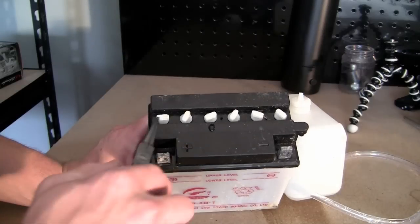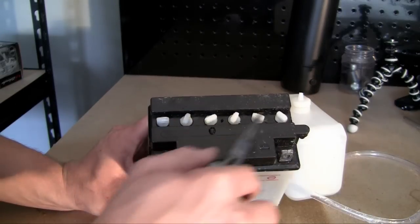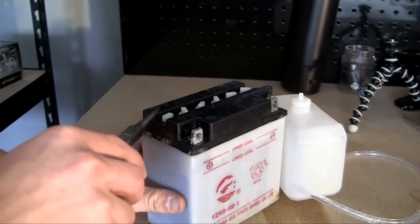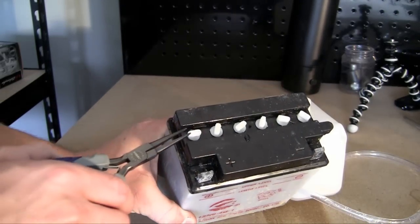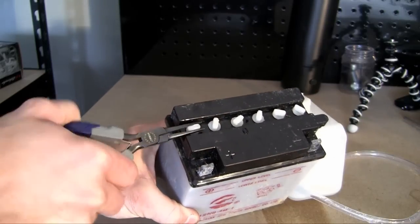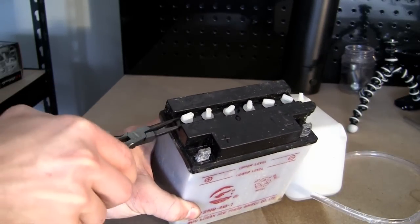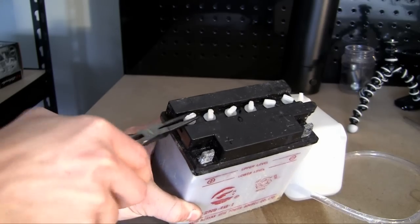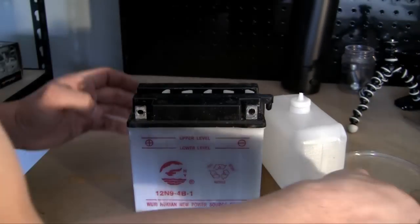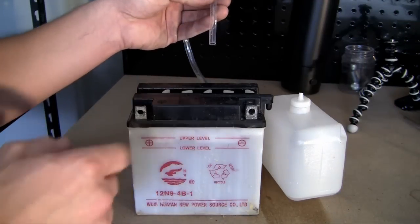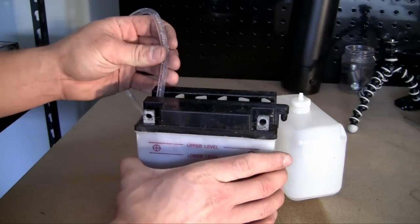If you take a look on the top of the battery, each one of these things are called cells. Now, you need to fill these up one by one. In order to access them, just go ahead and take a pair of pliers and pull out the plug. There we go. And make sure you only do them one by one. Don't take out all the plugs at once.